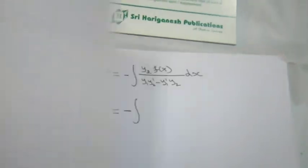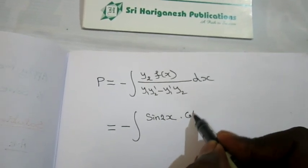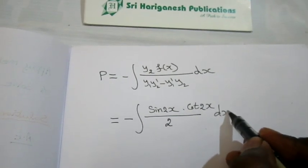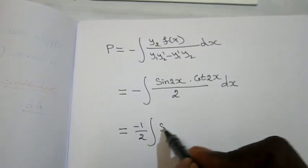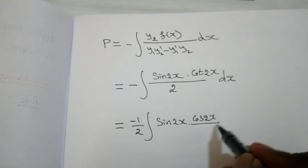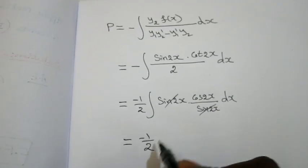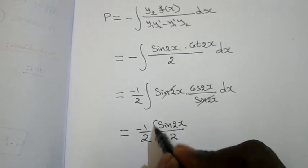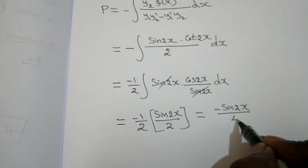Substituting into P: P = -∫[sin 2x · cot 2x / 2] dx. Taking 2 outside: P = -1/2 · ∫[sin 2x · (cos 2x / sin 2x)] dx. The sin 2x cancels, leaving P = -1/2 · ∫cos 2x dx = -1/2 · (sin 2x / 2). So P = -sin 2x / 4.